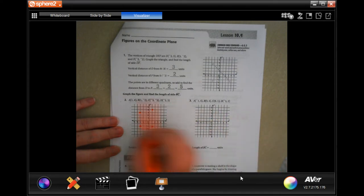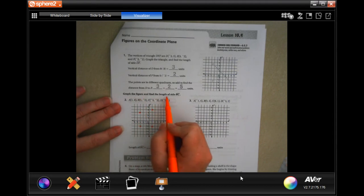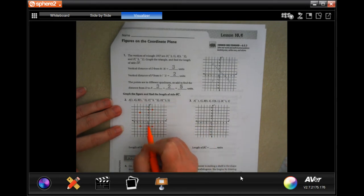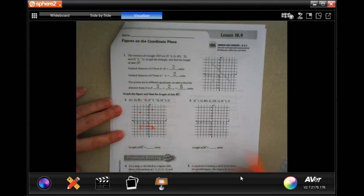Okay, so graph the figure and find the length of side B, C. Okay, well B to C, okay, so B started at 1, negative 2, so this one's B, which makes this one C. So I went 1, 2, 3, 4 places, 4 units, okay?